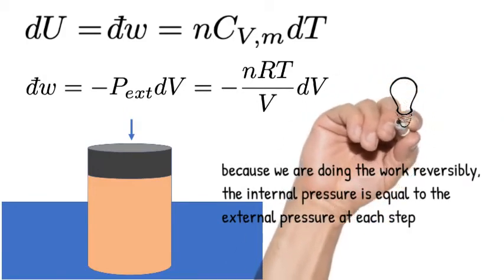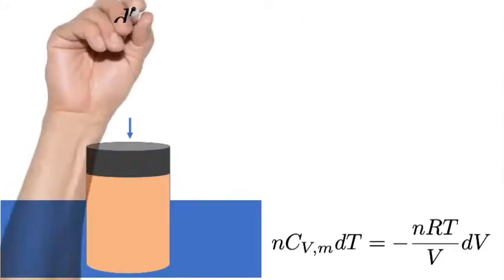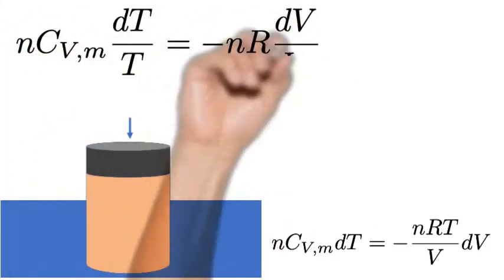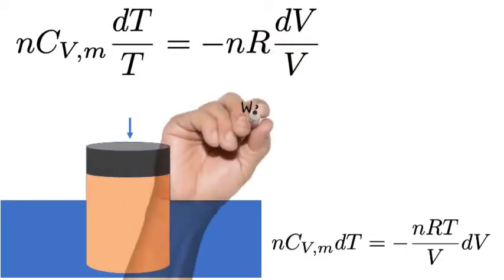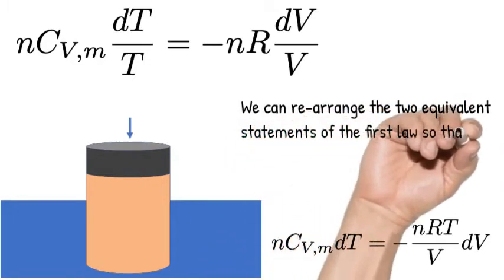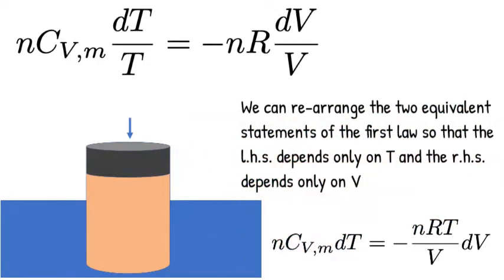We can use the ideal gas law to express the incremental change in work to state variables. Now we can use these two equivalent statements of the first law and rearrange them so that we have only changes in temperature on the left-hand side and only changes in volume on the right-hand side.